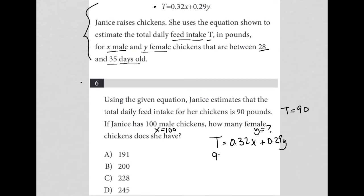So I'm going to replace T with 90 and replace X with 100, and solve for Y. 0.32 times 100 is 32, so this becomes 32 plus 0.29Y equals 90. I can subtract 32 from both sides. 90 minus 32 is 58. 58 equals 0.29Y. I can then divide both sides by 0.29.